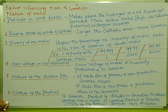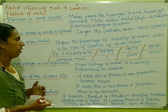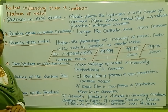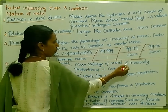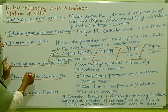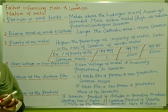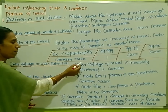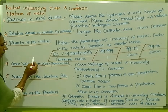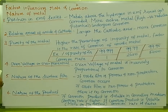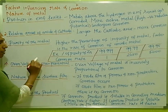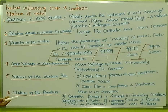The next factor is overvoltage, also called overpotential. Overvoltage is inversely proportional to the rate of corrosion. This means that if overvoltage is high, the corrosion rate is lower, and vice versa.